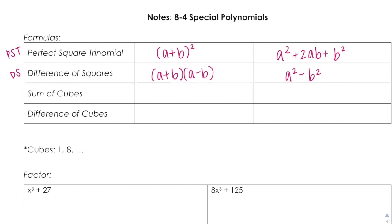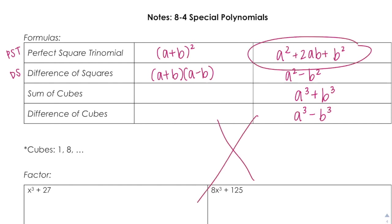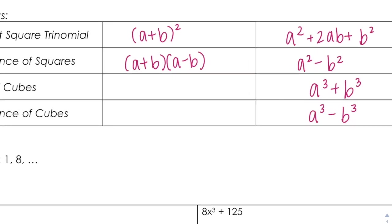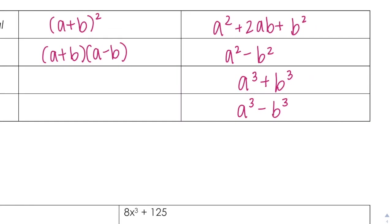Sum of cubes would be if you had A cubed plus B cubed. A difference of cubes would be if you had A cubed minus B cubed. The issue with these is that you can't set up your X and try to factor that way. For difference of squares you could, but if you have one of these two options, you have to know the formula. Because you have something cubed, you get a linear factor and you get a quadratic factor.